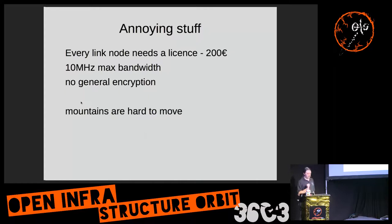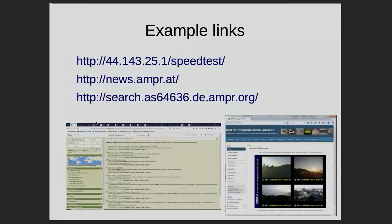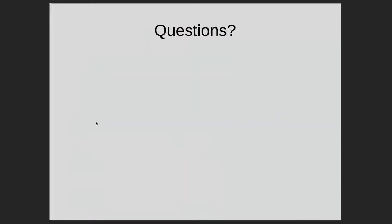The last big problem is that mountains are hard to move. If a mountain or building is in the way of a link, it's hard to get around, and even harder is getting access to a high tower and the permit to put equipment up there. Here are some example links showing how a hamnet link looks — sometimes simple IP addresses are used, other times you see the AMPR notation, which stands for Amateur Packet Radio. The amateur radio network has all its own stuff: its own DNS, its own web search, and lots of possibilities to use the network.